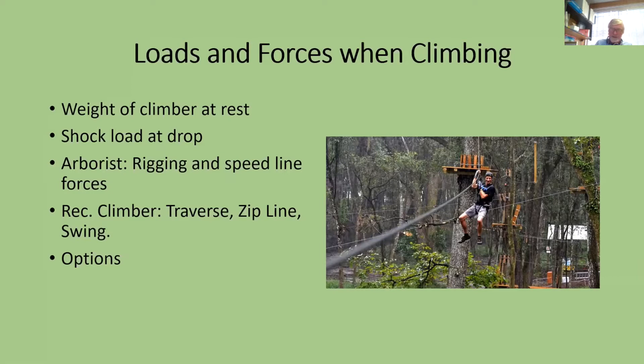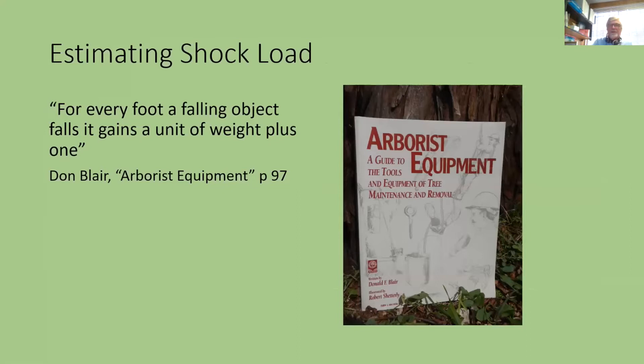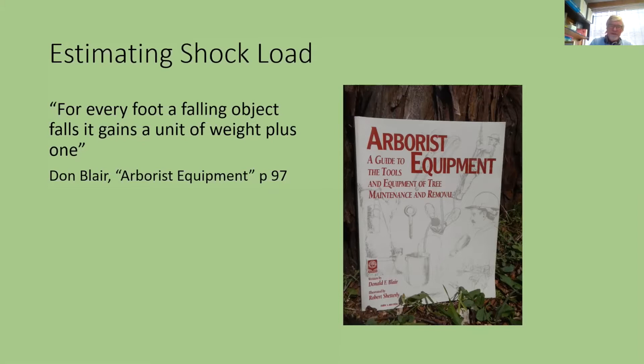Estimating shock load is mathematically complicated with no simple formula; it depends a lot on the stretch of the rope. Don Blair published a book, Arborist Equipment, with good information. He came up with this: for every foot a falling object drops, it gains a unit of weight plus one, where the unit is the original weight. So if you weigh 150 and drop one foot, that's 300; another foot, 450. This isn't exactly right, but it shows the magnitude of multiplication you need to be thinking about.